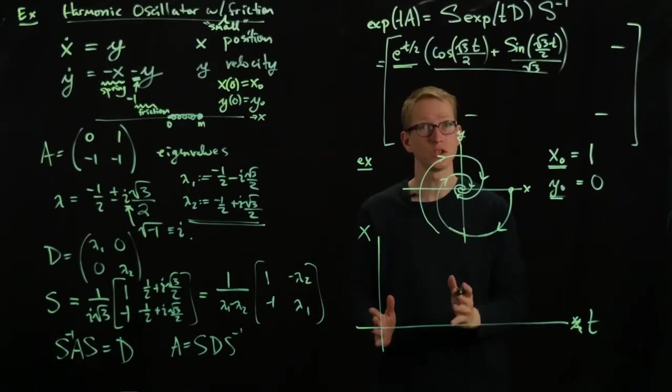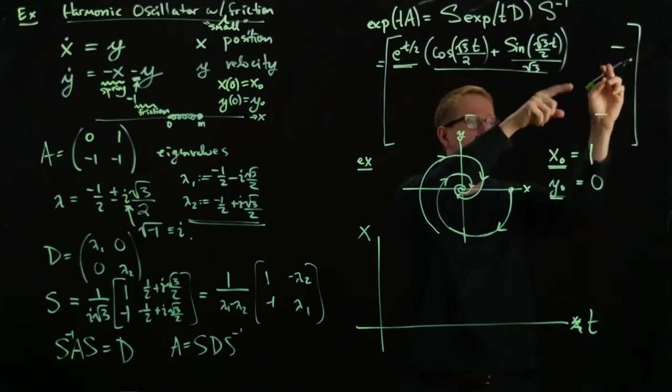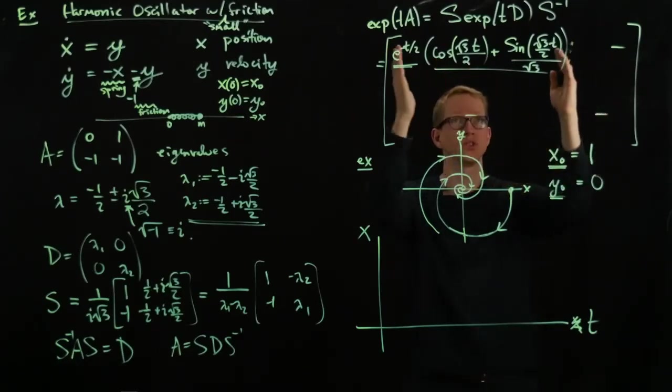Then the position is given by this times this, this times 1 plus this times 0. So it's just this term.